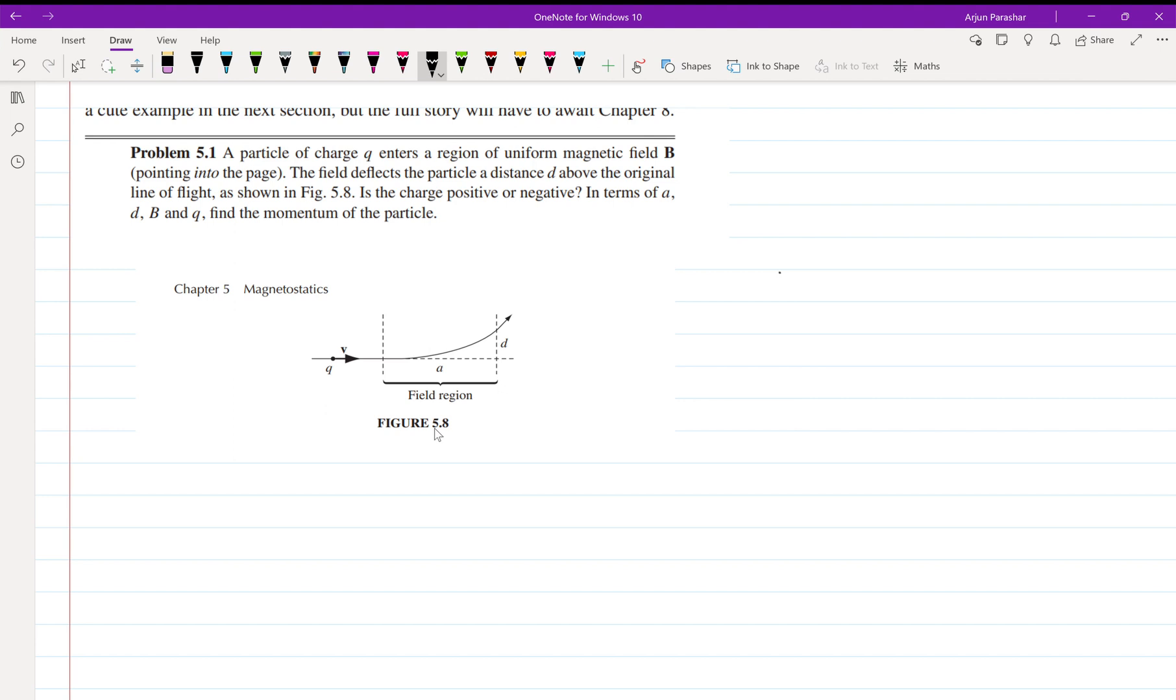The magnetic field B is pointing into the page and the field deflects the particle a distance d above the original line of flight.